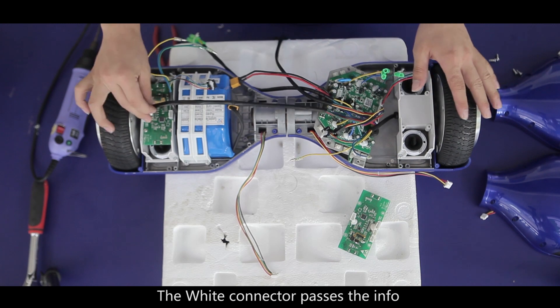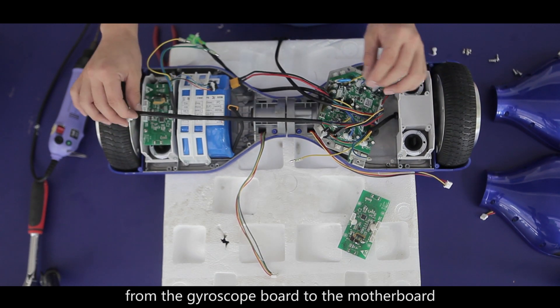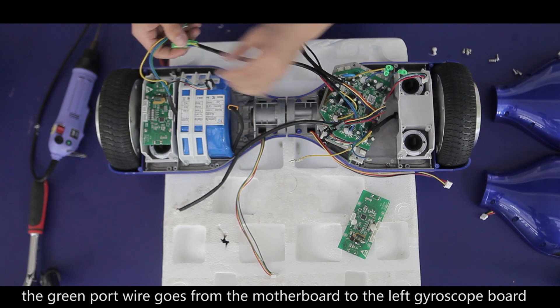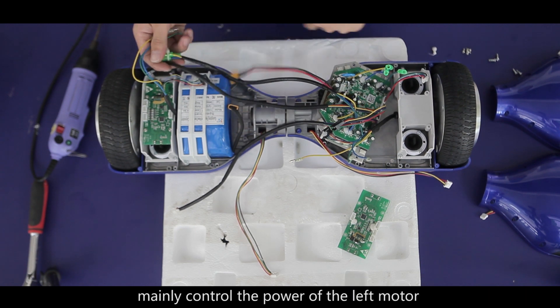The white connector passes the info from the gyroscope board to the motherboard. The green port wire goes from the motherboard to the left gyroscope board mainly to control the power of the left motor.